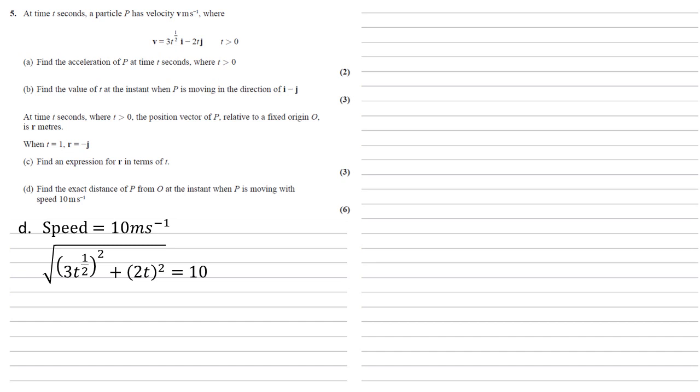So we've got the square root of the sum of 3t to the half squared plus 2t squared. Squaring those brackets would give us 9t plus 4t squared underneath the square root. And if we square both sides, we get that this 9t plus 4t squared is equal to 100. Rearranging, we've got 4t squared plus 9t minus 100 equals 0. So here's the quadratic to be solved.